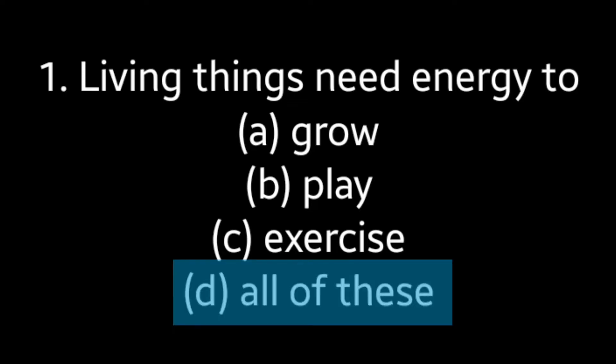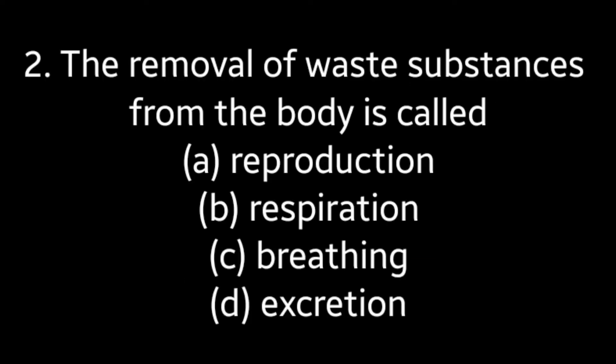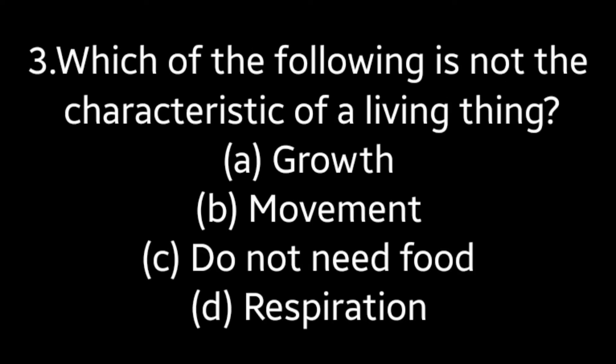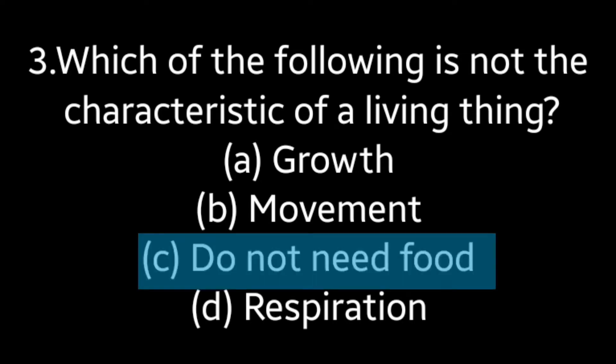Second question: The removal of waste substances from the body is called — option A: reproduction, option B: respiration, option C: breathing, option D: excretion. Answer is option D: excretion. Third question: Which of the following is not a characteristic of a living thing? Option A: growth, option B: movement, option C: do not need food, option D: respiration. Answer is option C: do not need food.